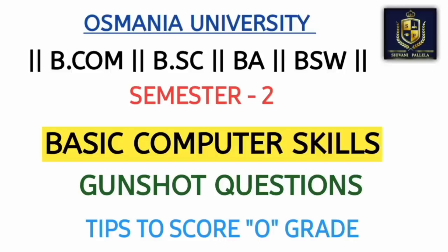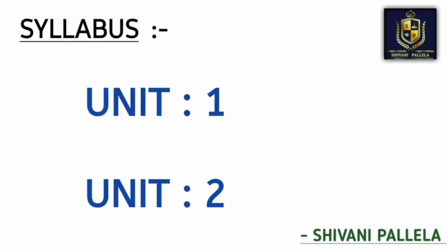Coming back to the syllabus — there are a total of two units. The question paper is 40 marks and the time duration is one and a half hours. You need to attempt two long questions and two short questions. Time management plays a key role because you won't have enough time to write both long and short answers.